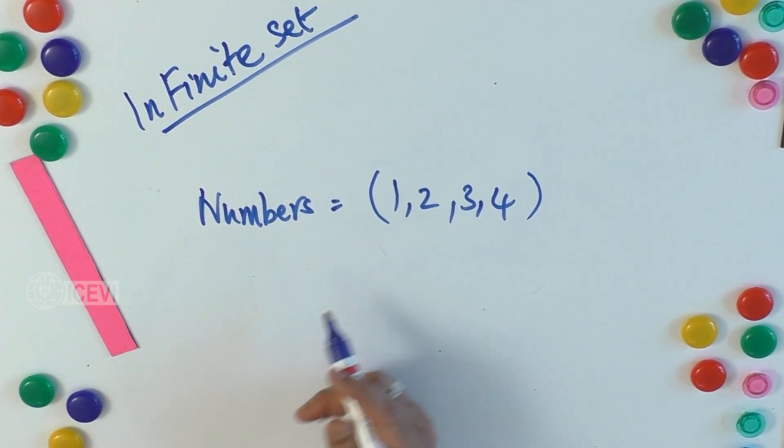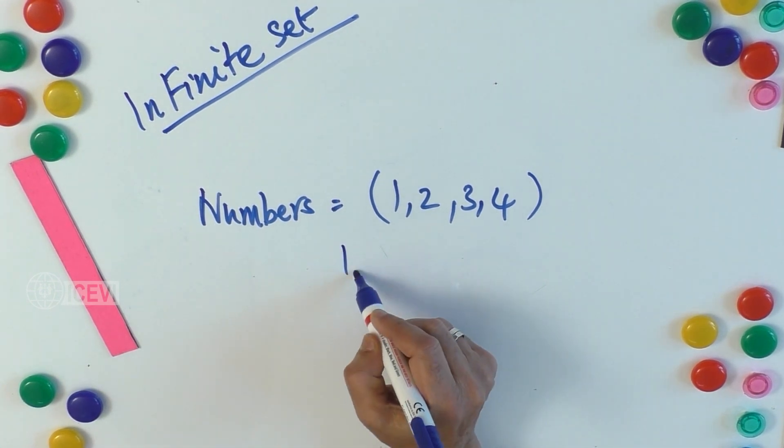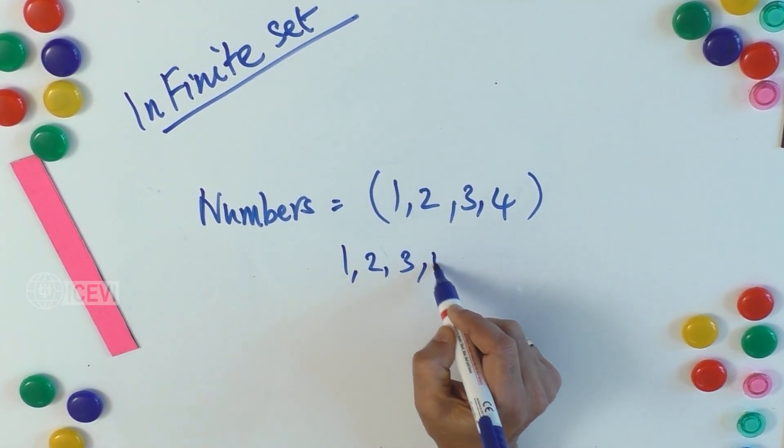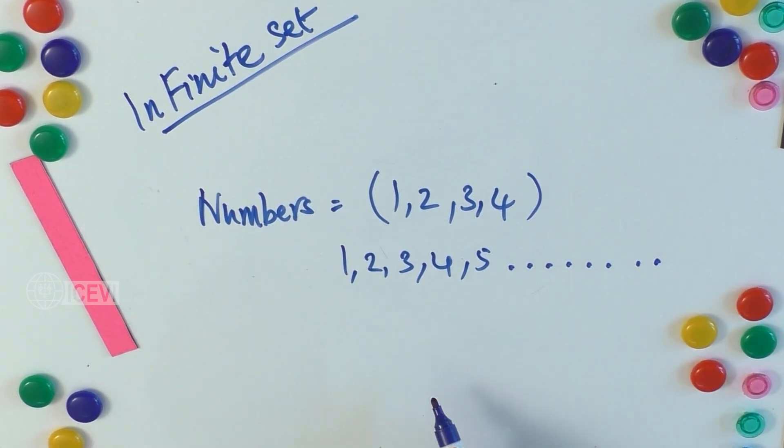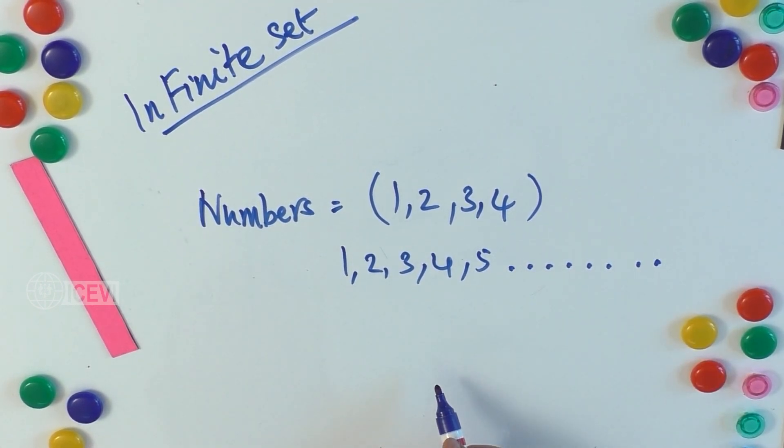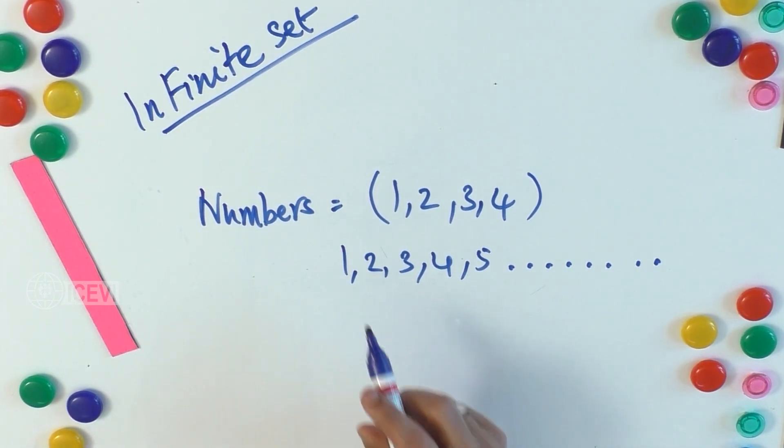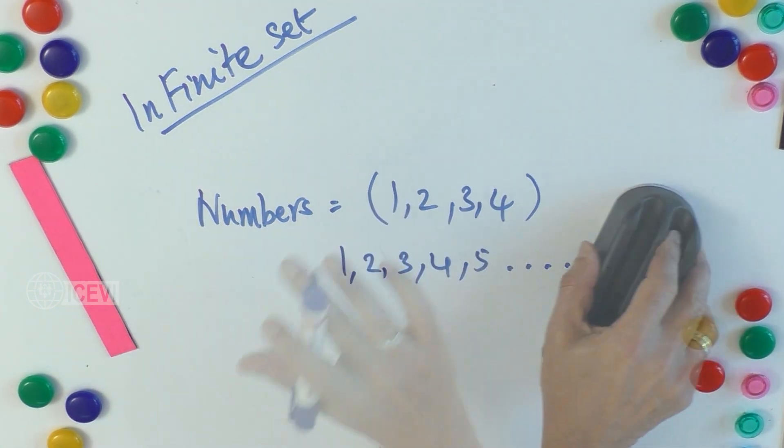Suppose you say 1, 2, 3, 4, 5, etc., going up to infinity, that means we cannot count. So in that case, we call this an infinite set.